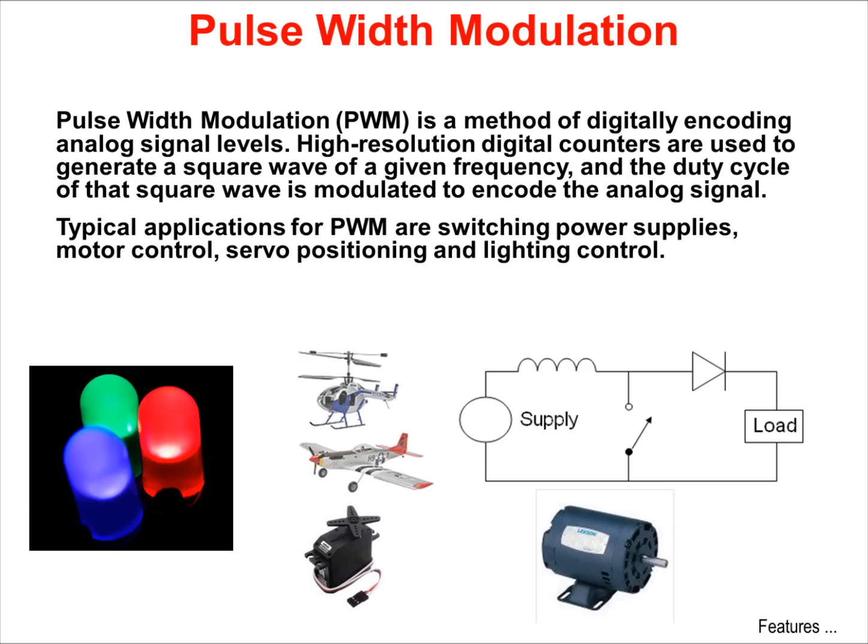Pulse Width Modulation, or PWM, is a widely used technique to digitally encode analog levels. High resolution counters are used to generate a square wave of a given frequency, and the duty cycle of that wave is then modulated to encode the analog signal. PWM is typically found in motor control, servo positioning, lighting, and switching power supply applications.